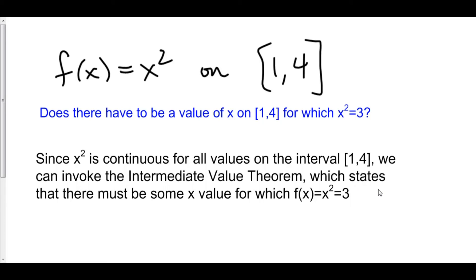So the answer is yes. There does have to be a value for which x squared equals three. And of course, to verify this, all we have to do is just set x squared equal to three. And of course, we get x is equal to plus or minus the square root of three.